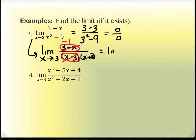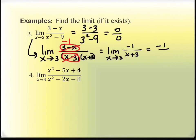So we have the limit as x approaches 3 of negative 1 over x plus 3. We're plugging in the number 3, and we get the limit equal to negative 1 over 6. So it's all about checking to see if we get 0 over 0, and then factoring. When it starts as 0 over 0, then factors, and we actually get an answer when we're done, it means the graph had a hole in it.